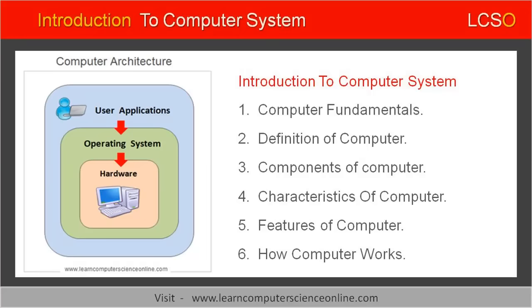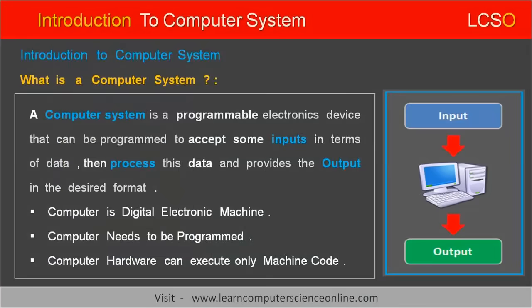Let us start with a simple introduction to the computer system. A computer system is defined as a programmable electronic device that can be programmed to accept input data, then process this input data as per the program instructions. The computer then presents the processed data to the user as an output. The user can utilize the processed data for some meaningful work.